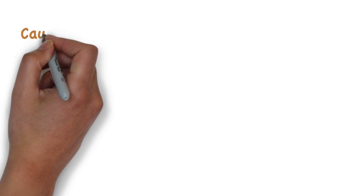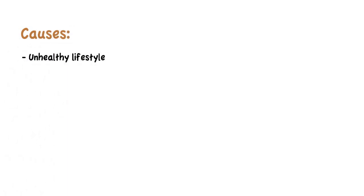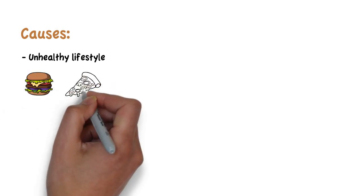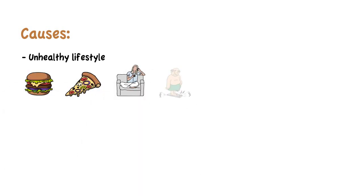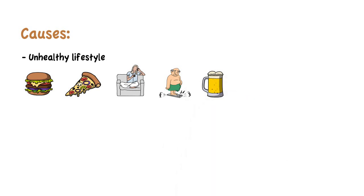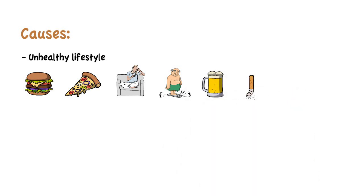Metabolic syndrome is usually caused by an unhealthy lifestyle that includes an unhealthy diet, a lack of physical activity, and weight gain, especially around the waist — so having abdominal obesity. It is also linked to excessive alcohol consumption and smoking.